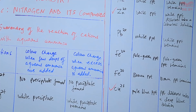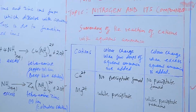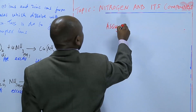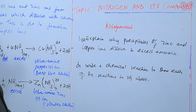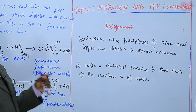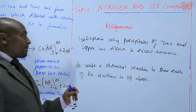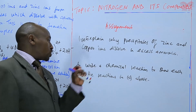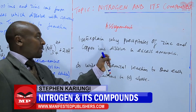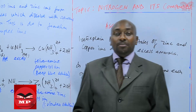You can see that the tetraamine copper(II) ion and tetraamine zinc(II) ion are complex ions. Our assignment for today: first, explain why precipitates of zinc and copper ions dissolve in excess ammonia. Number two, write a chemical equation to show each of the reactions above, supporting each one with a chemical equation. We are going to stop there. Until next time, goodbye.